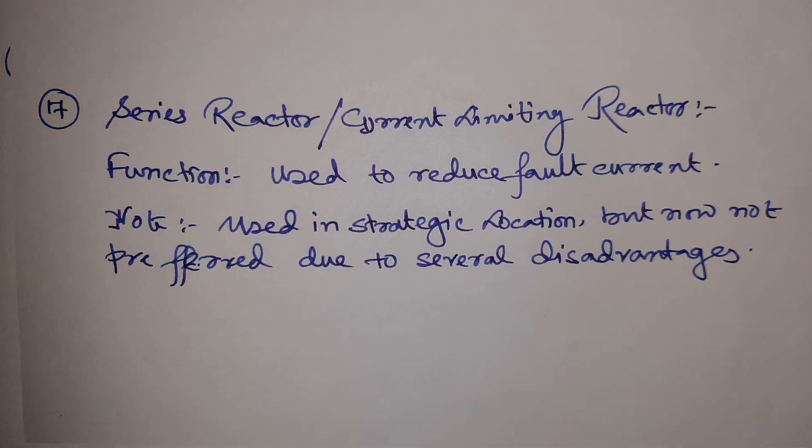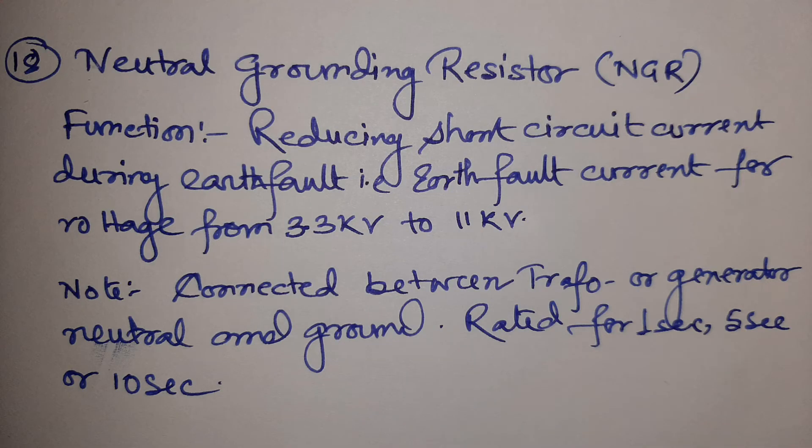Our next equipment is the neutral grounding resistor or NGR, also known as NER or neutral earthing resistor. Its function is to limit the earth fault current, and it is used in voltage ranges from 3.3 kV to 11 kV. I have already dedicated a video on NGR and its calculation, so you can check that. It is connected between the transformer or generator neutral and ground. Its ratings are for one second, five seconds, or ten seconds — meaning it restricts the earth fault current for that duration. For example, an NGR designed to restrict earth fault current at 400 amperes would be rated 400 amperes for one, five, or ten seconds.